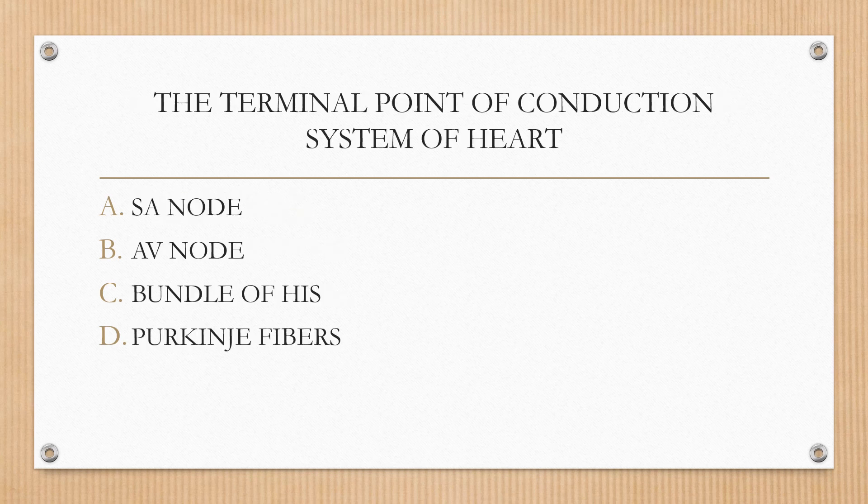Next question. The terminal point of the conduction system of the heart is: option A SA node, option B AV node, option C bundle of His, option D Purkinje fibers. The correct answer is option D, Purkinje fibers.